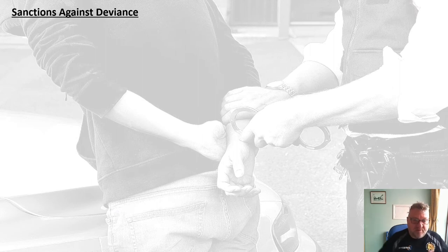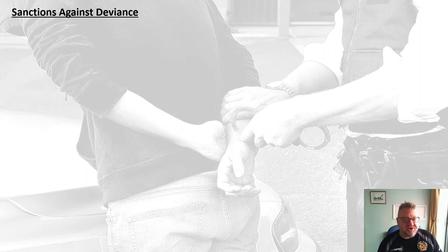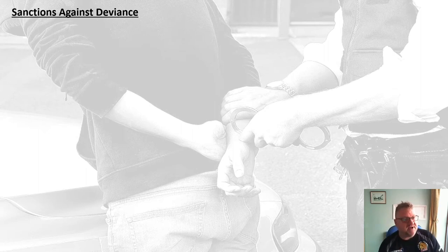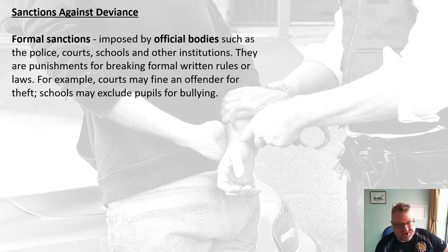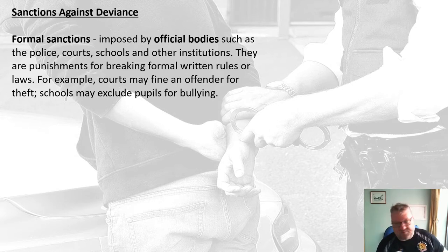Now we've defined what deviance is, what are the sanctions? In any question you get on deviance, try and show what sanctions we give against deviance. Obviously if it's a crime, you can have a formal sanction — formal sanctions imposed by official bodies such as the police, the courts, schools, and other institutions. These are punishments for breaking the rules or the laws, so for instance a court may fine an offender for theft, or schools can exclude pupils for bullying.